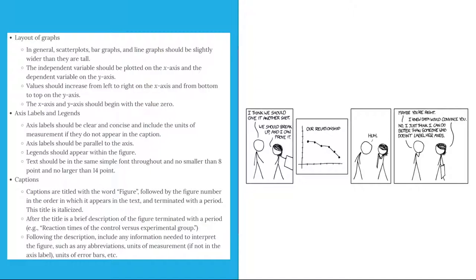Captions. Captions are titled with the word figure, followed by the figure number in the order in which it appears in the text, and terminated with a period. The title for a figure is italicized. After the title is a brief description of the figure terminated with a period. For example, reaction times of the control versus experimental group period. Following the description, include any information needed to interpret the figure, such as any abbreviations, units of measurement, if not in the axis label, units of error bars, and so on.